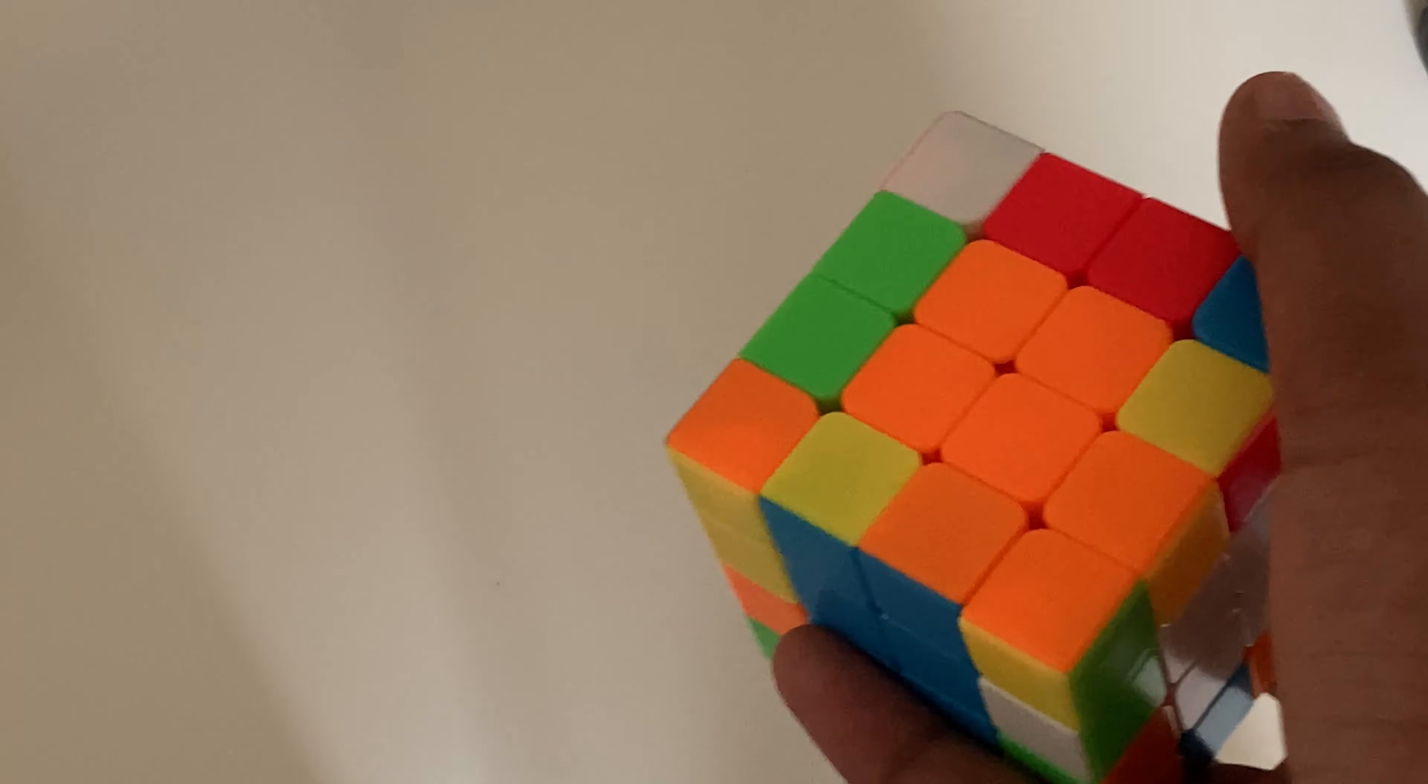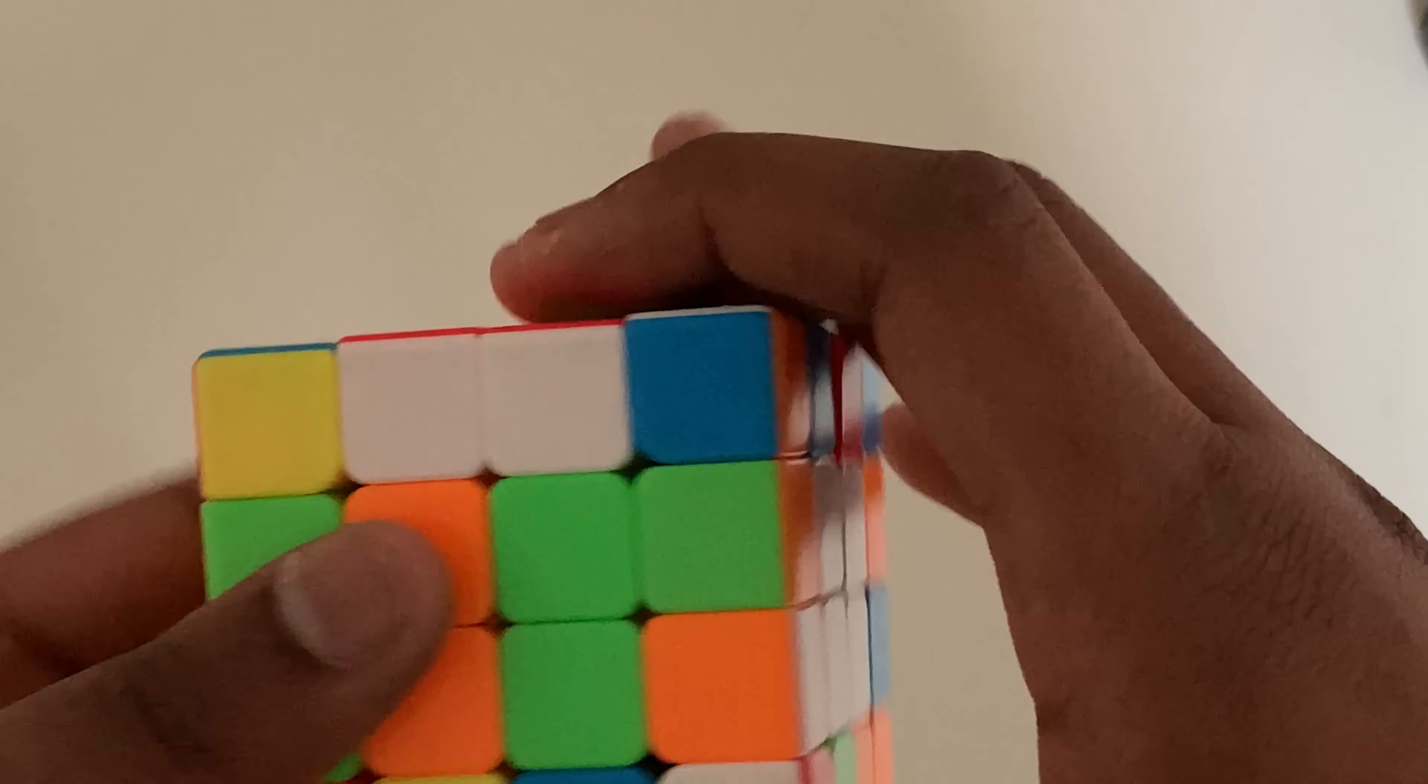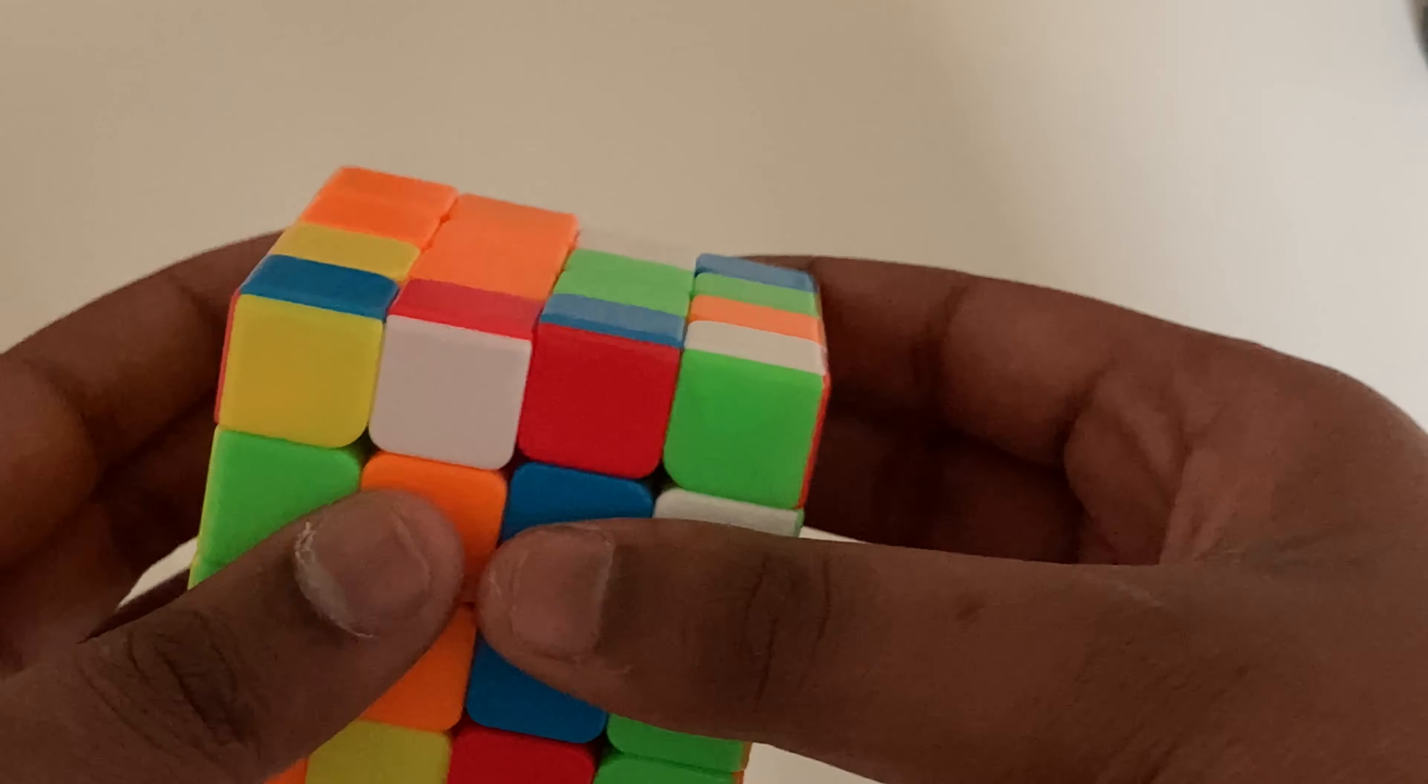oh, orange is already completed, so we don't have to worry about anything. Now, let's say it wasn't completed, and it was something like that. At the end, you're just going to have to do that thing where you go rw u2 rw prime,